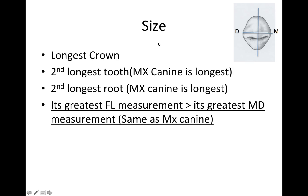Size is another area with a lot of exam questions. This tooth has the longest crown — you'll see questions on that. It is also the second longest tooth overall, meaning crown plus root. The maxillary canine is the longest tooth overall and has the longest root, while the mandibular canine has the second longest root.